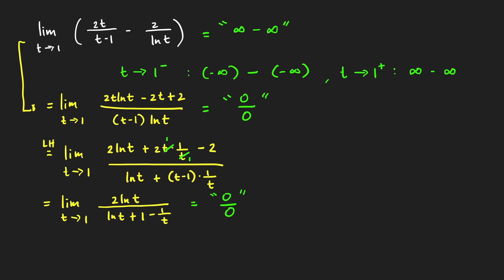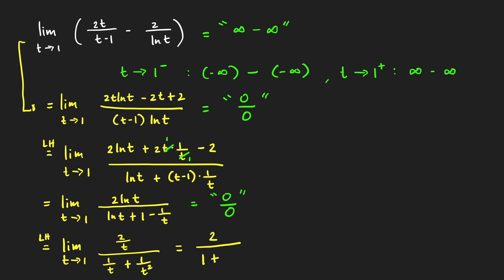Taking derivatives again: the derivative of 2 ln t is 2/t, and the derivative of ln t + 1 − 1/t is 1/t + 1/t squared. Now the limit of the denominator is not equal to 0, so we can apply the quotient rule directly. As t approaches 1, this equals 2/1 over (1/1 + 1/1) = 2 over 2, which equals 1. Wait — over 1 over 1 plus 1 over 1 squared gives 1 + 1 = 2, so the limit equals 2 over 2 = 1. Correcting: 2/(1/t + 1/t²) at t=1 gives 2/(1+1) = 2/2 = 1.